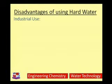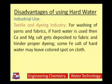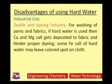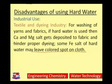Now, what are the disadvantages of using hard water in industries? Water is a very important engineering material used in a number of industries — paper industry, textile industry, sugar industry, etc. In the textile and dyeing industry, if hard water is used to wash yarn and fabrics, the calcium and magnesium salts get deposited on the fabric and hinder proper dyeing. Some iron salts in hard water may leave colored spots on clothes, reducing the quality of fiber.